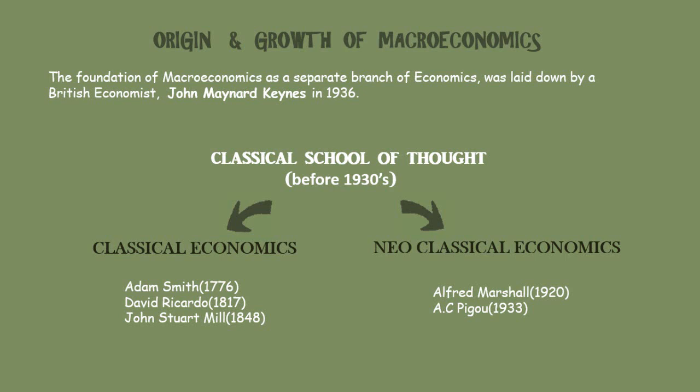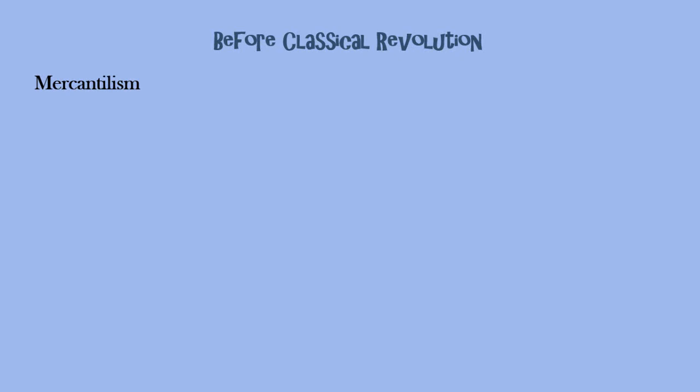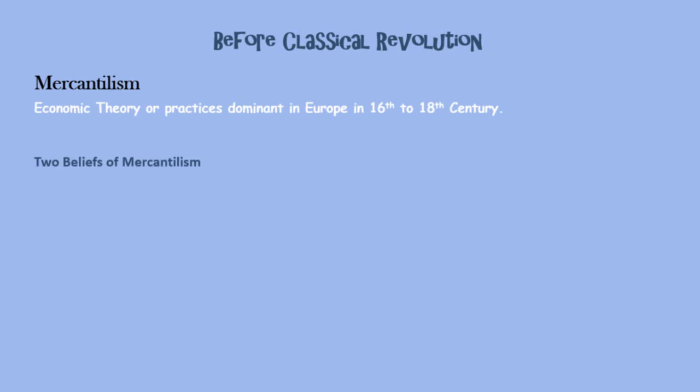But before beginning with all these things, let's study what was actually happening before the classical economics. So what was happening before the classical revolution? The period was dominated by mercantilism — an economic theory or practice dominant in Europe in the 16th to 18th century.